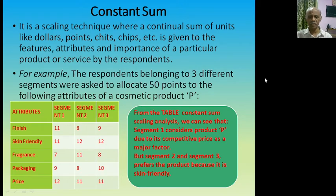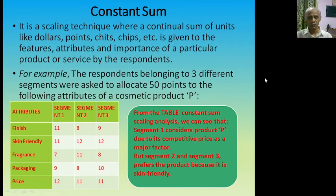The attributes considered are: how the particular product is finished, whether the product is skin friendly, whether the product has fragrance, whether the packaging is effective or attractive, and whether the price is reasonable. There are three types of segments — segment 1, segment 2, and segment 3.